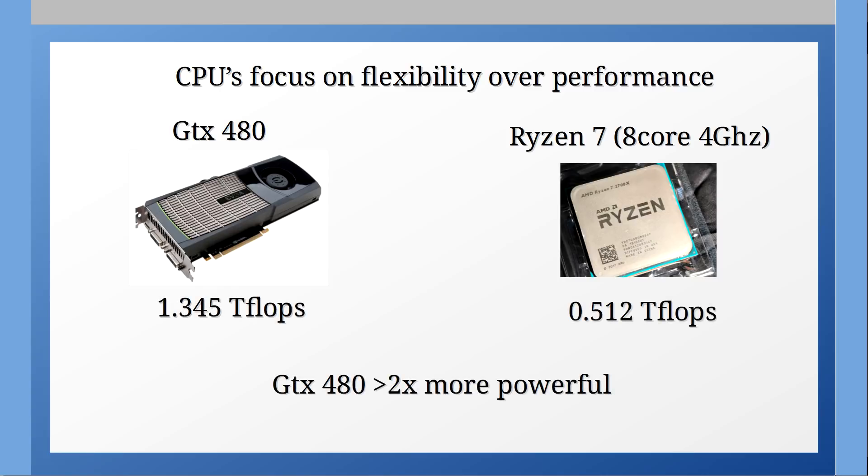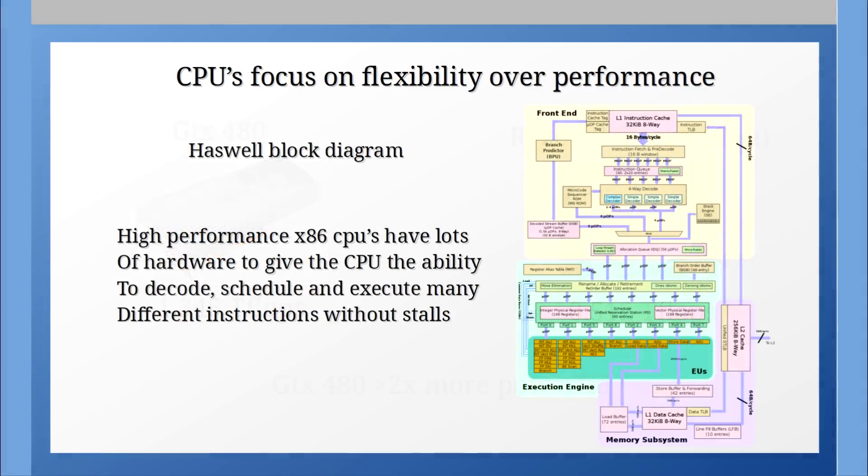For example take the GTX 480, that thing is rocking around 1.35 teraflops whereas an 8 core Zen CPU at 4 GHz has around half of a teraflop. So when I say performance what I really mean is flexibility. This is where SIST instruction sets really shine.